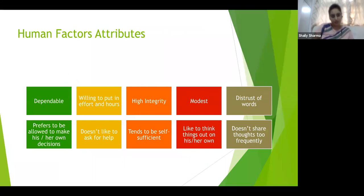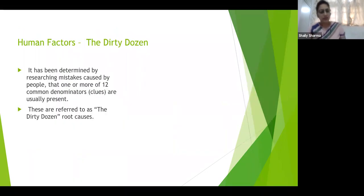Human factor attributes which is dependable, willing to put in effort and hours, high integrity, modesty, distrust, prefer to allow to make his or her decision, does not like to ask for help, tend to be self-sufficient, like to think out on his or her own. This is again one analysis tool which is given named as dirty dozen, which basically gives us 12 clues with which we can analyze the study of human performance in their public area or public sector, like in aviation. It has been determined by researching mistakes caused by people.